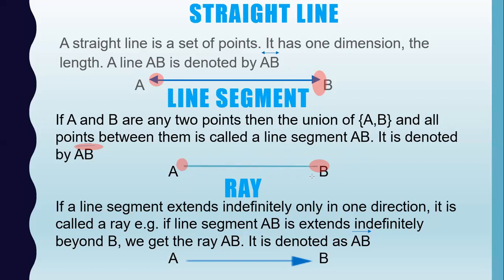Now, what about a ray? If a line segment extends indefinitely in one direction, it is called a ray. A ray is denoted by one arrowhead, meaning it can extend in only one direction.